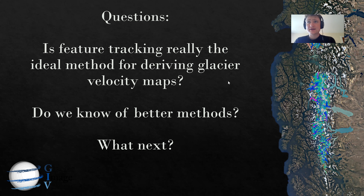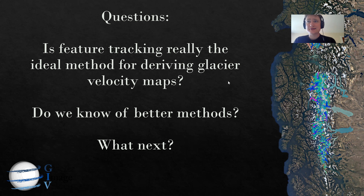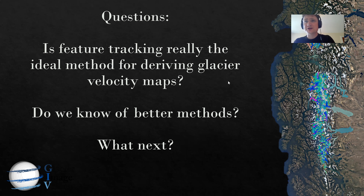Can we do better? Absolutely. There are a number of issues with feature tracking, particularly involving the quality of the imagery — it can't be run at night, and it can't be run on cloudy datasets, which radar imagery can. There are also issues relating to the nature of the technique itself: it solves for two unknowns — flow speed and flow direction — however, only one of those is really interesting. Flow direction is generally pretty trivial for most glaciers, so we're actually solving for an unknown we don't really need to solve for, which is inefficient.